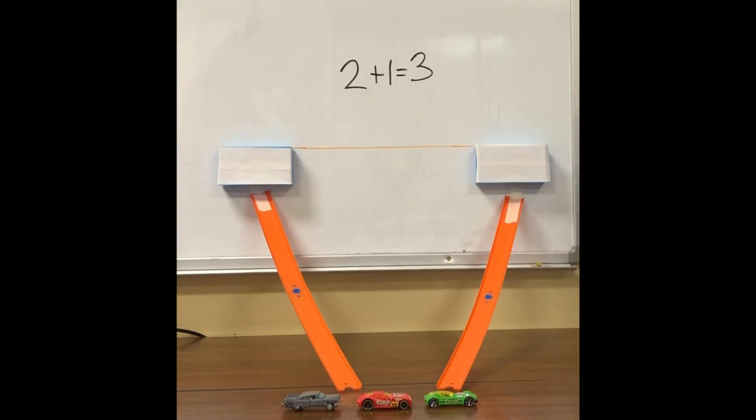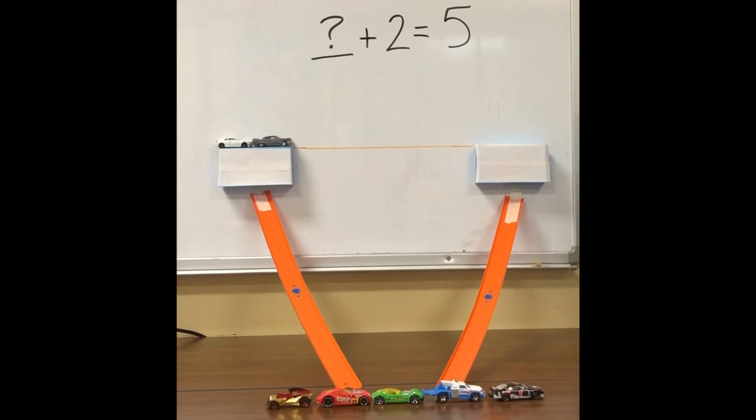But what if the unknown is in a different position than the sum? What do we do? In this equation, we have the unknown as the first addend. What plus 2 equals 5?